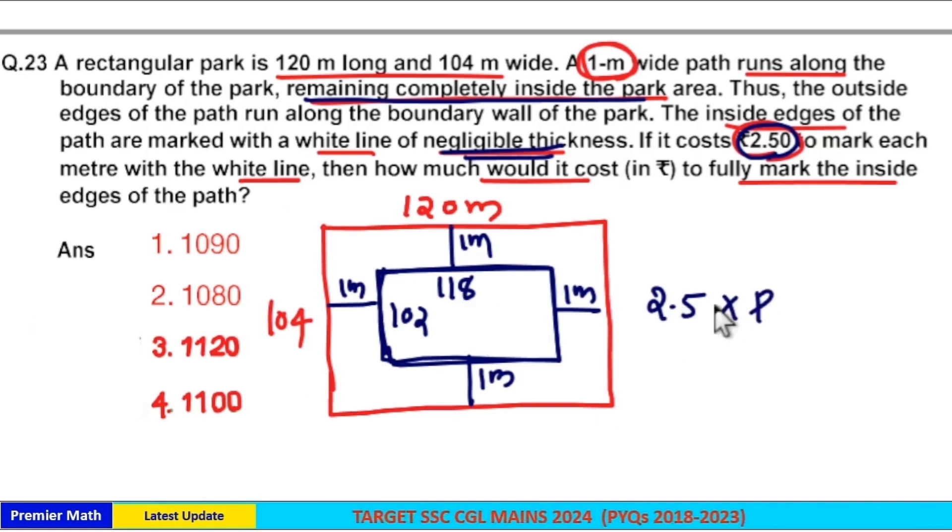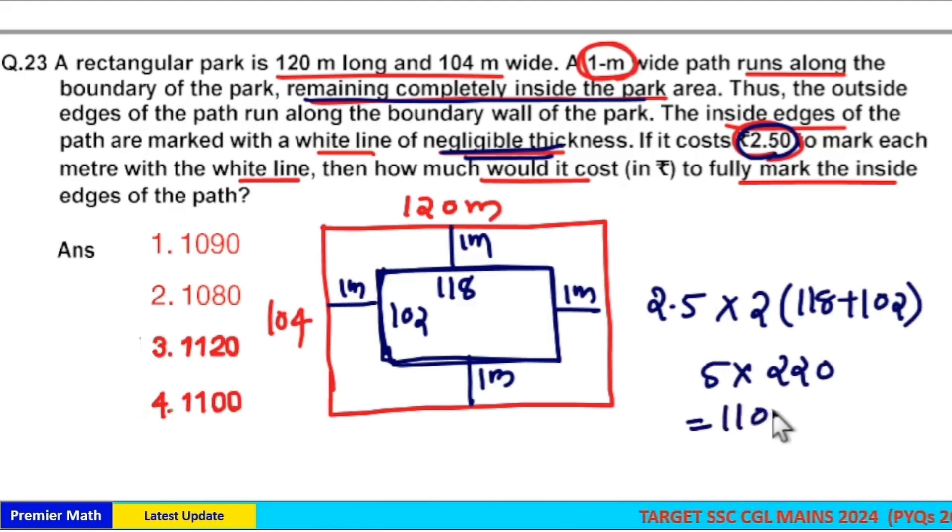Perimeter is equal to 2 into A plus B, that is 2 into 118 plus 102, which is equal to 2 into 220. So the cost is 2.5 times this, which is 5 into 220, which equals 1100. Option 4 is your answer.